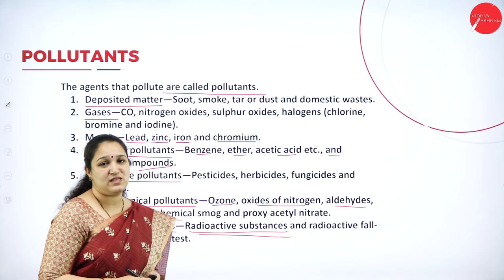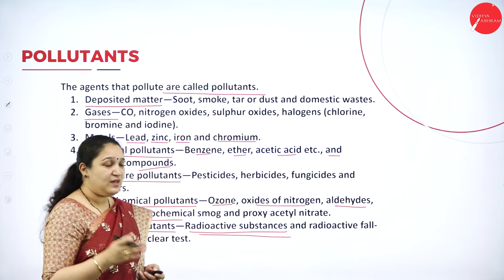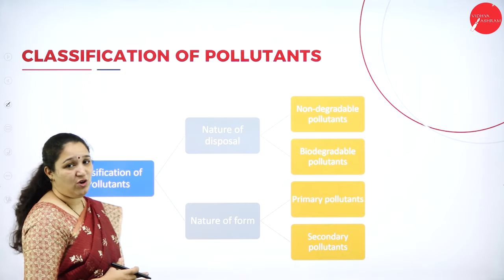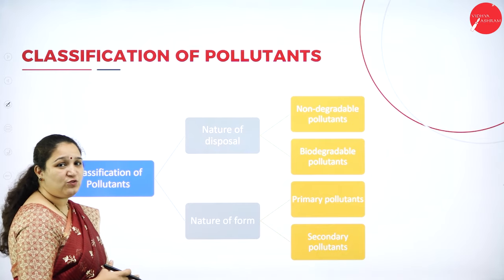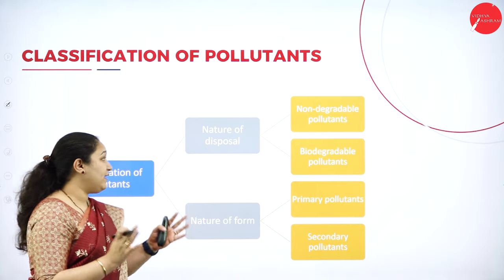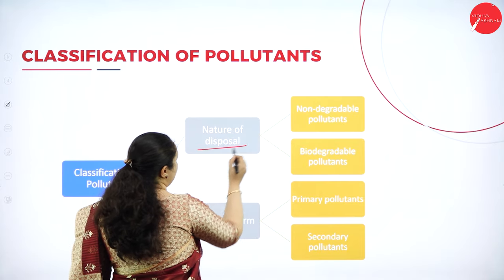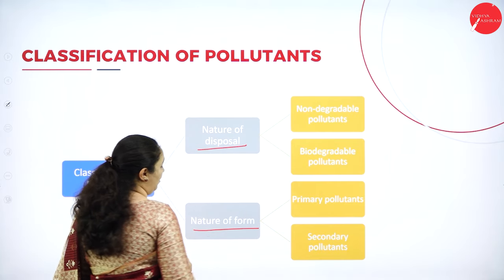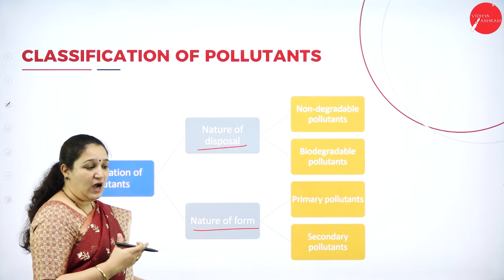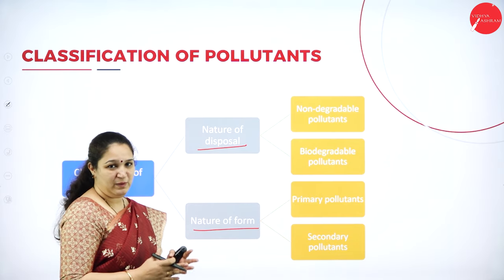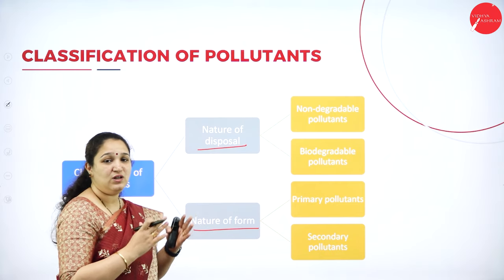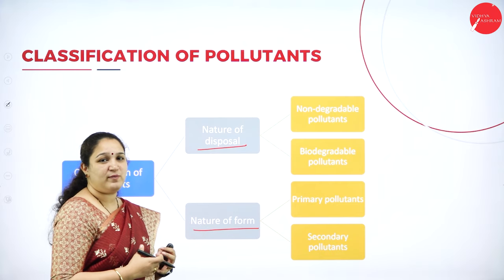Then we have radiation pollutants, which are basically caused by radioactive substances. The pollution caused by radioactive substances is called radiation pollution. So these are the few types of pollutants we can see around us. Next is the classification of pollutants — they are broadly classified based on nature of disposal and nature of how they are formed.